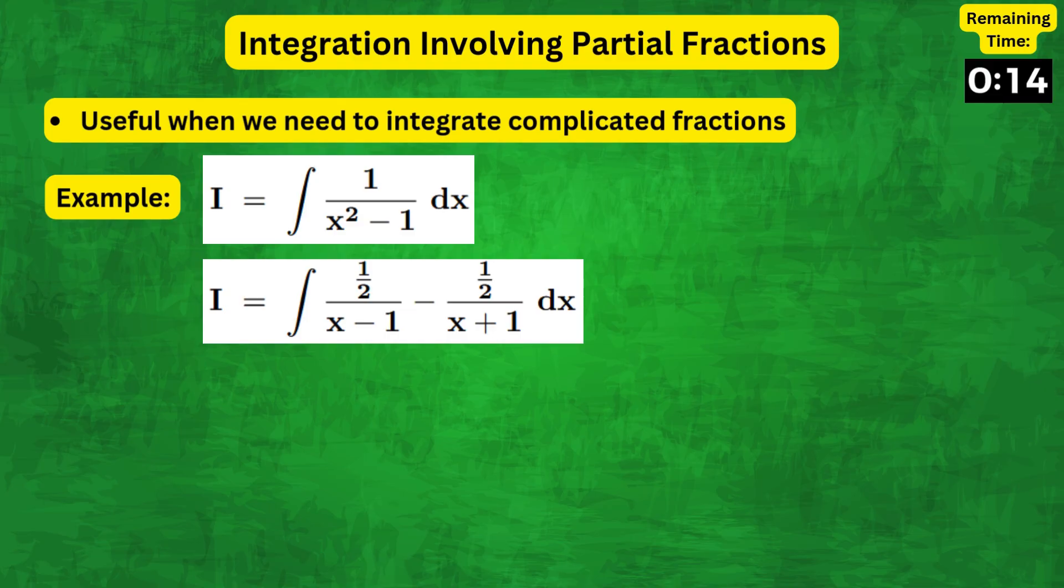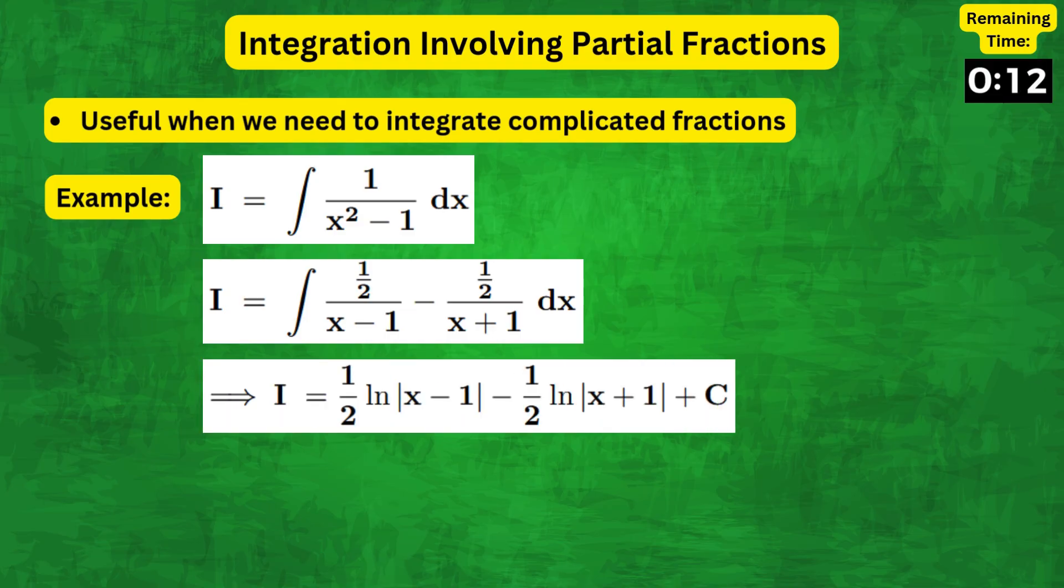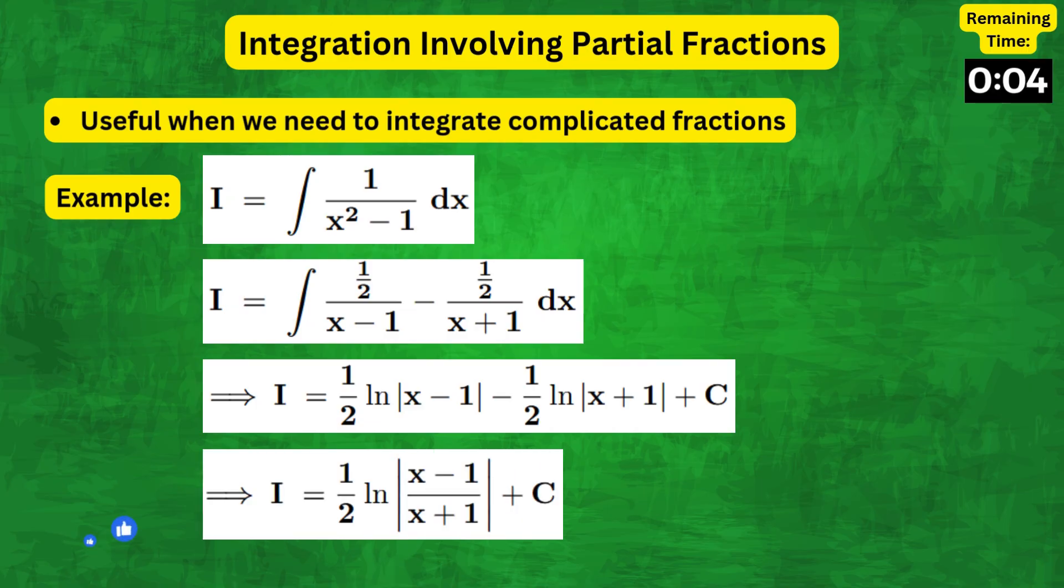the integral becomes 1/2 over x minus 1 minus 1/2 over x plus 1. And that then integrates out to 1/2 natural log of modulus of x minus 1 minus 1/2 natural log of modulus of x plus 1 plus C, which can be simplified as 1/2 natural log of modulus of (x - 1)/(x + 1) plus C.